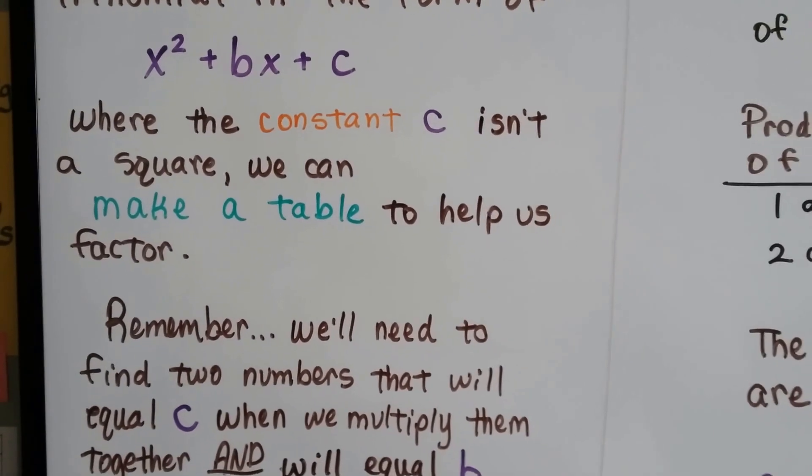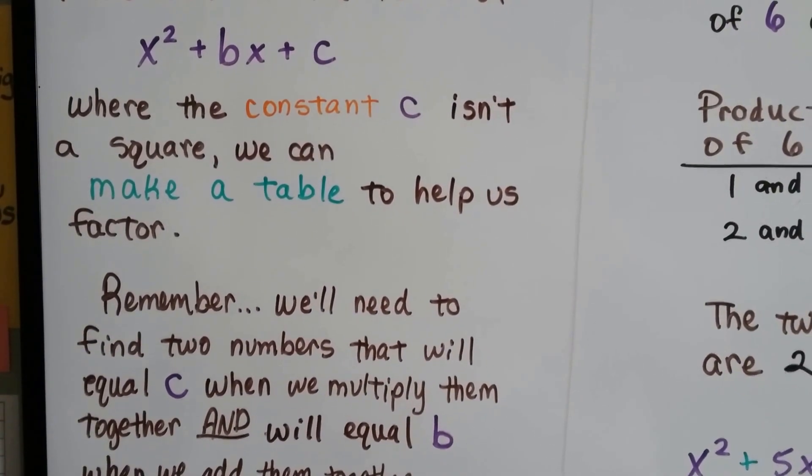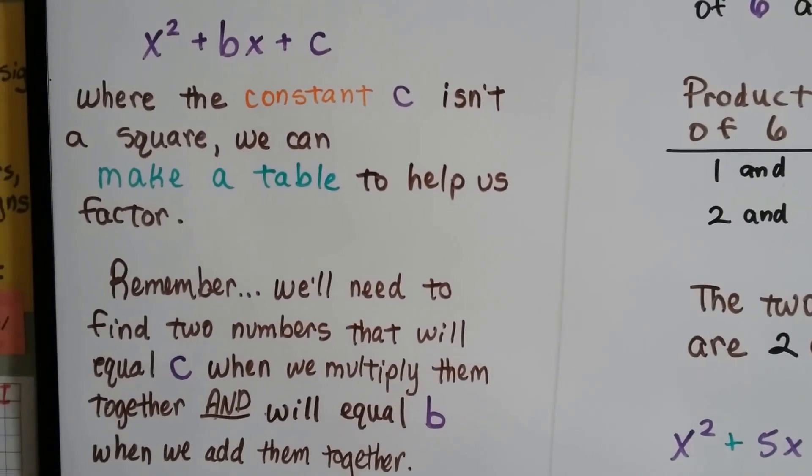Remember, we need to find two numbers that will equal c when we multiply them together and that will equal b when we add them together.